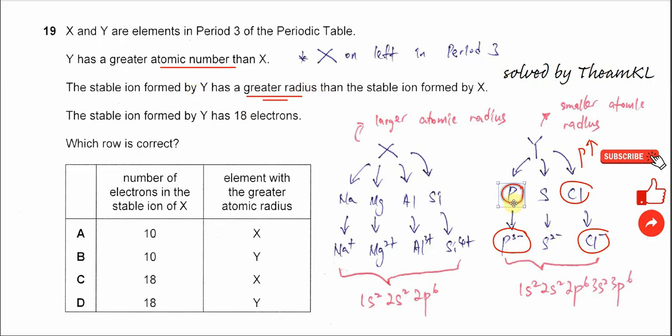So we know that X is one of these: sodium, magnesium, aluminium, or silicon. These elements form ions with the configuration 1s²2s²2p⁶ - only two electron shells - and this is much larger than the Y ion. So the number of electrons in the stable ion X must be 10.